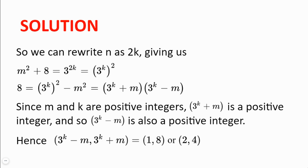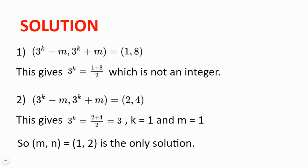We will look at both of these cases in turn to see if we can find some solutions. So first we will look at 3 to the power of k minus m equal to 1, and 3 to the power of k plus m equal to 8. This gives 3 to the power of k equal to 1 plus 8 divided by 2, which gives us a k which is not an integer.